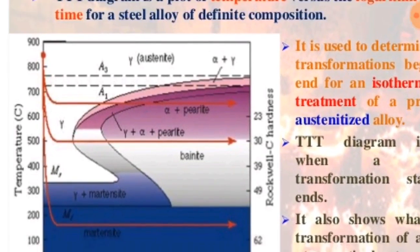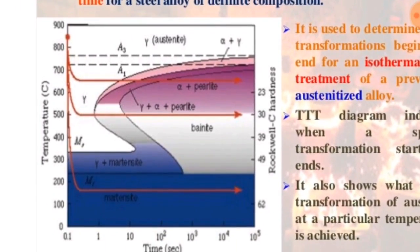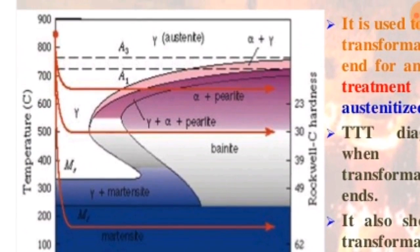Here we see the TTT diagram containing the phases austenite, bainite, perlite, and martensite.